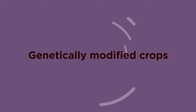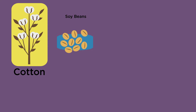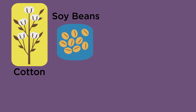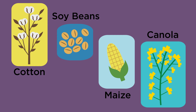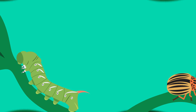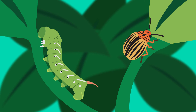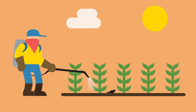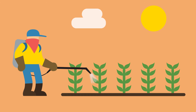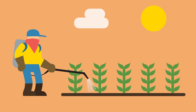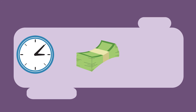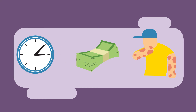Crops that are most commonly modified are cotton, soybean, maize and canola. Crop yields are often negatively affected because pests like insects damage the crops. Traditionally, farmers have sprayed their crops with pesticides to kill the insect pests, but this is time consuming, expensive and often harmful to the farm workers in contact with the poisons.